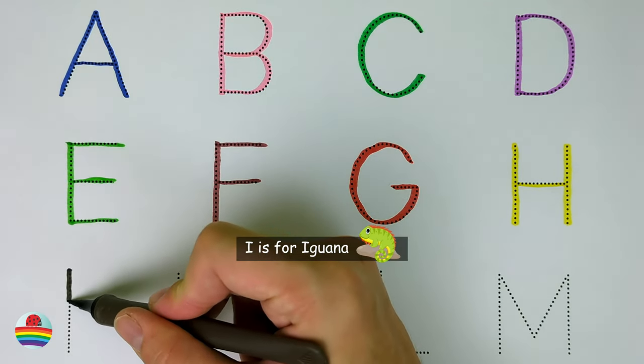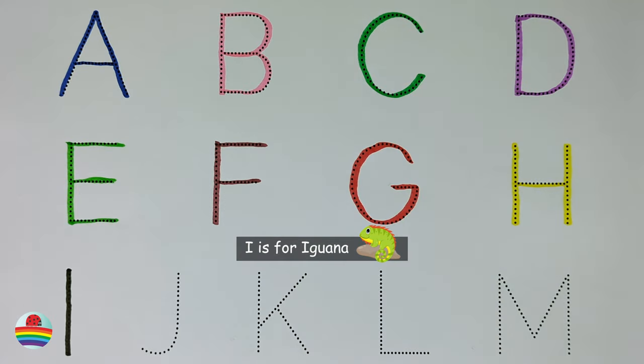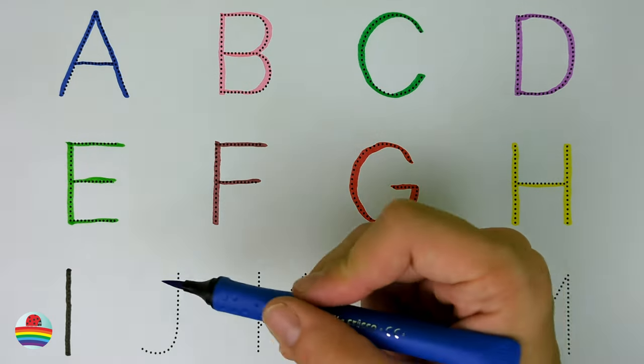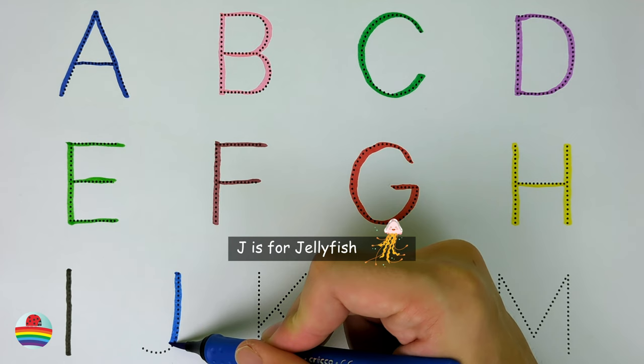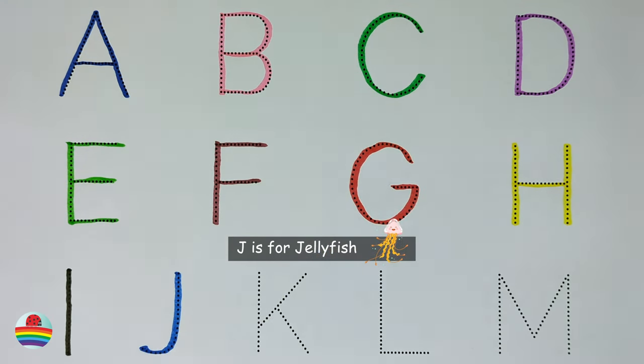I. I is for iguana. I. J. J is for jellyfish. J.